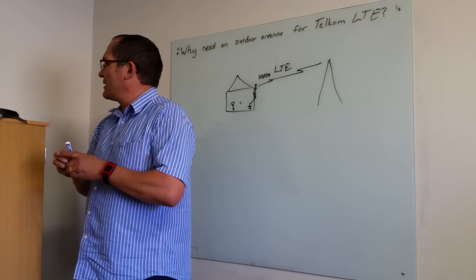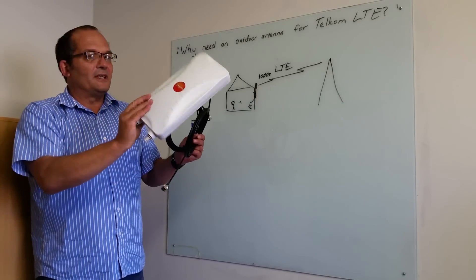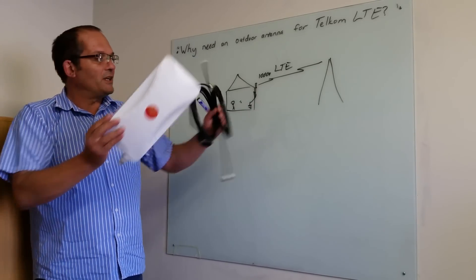Just to show you what that looks like, you get an outdoor antenna like this. This one's actually two antennas in one and I'll explain why. Two cables.